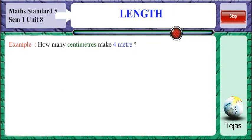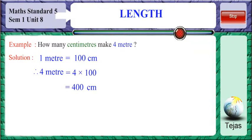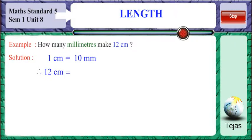How many centimeters make 4 meters? Since 1 meter equals 100 centimeters, 4 meters equals 100 × 4 = 400 centimeters. How many millimeters make 12 centimeters? Since 1 centimeter equals 10 millimeters, 12 centimeters equals 10 × 12 = 120 millimeters.